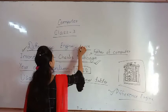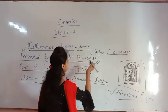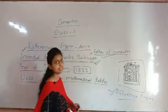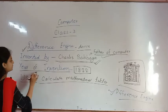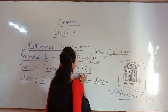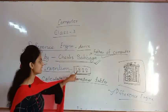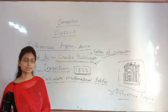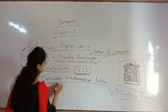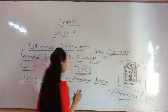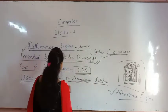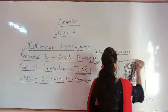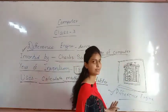To revise: the difference engine was invented by Charles Babbage, who is also known as the father of computer. The year of invention was 1822. The use of this device is to calculate mathematical tables. This is the structure of the difference engine.